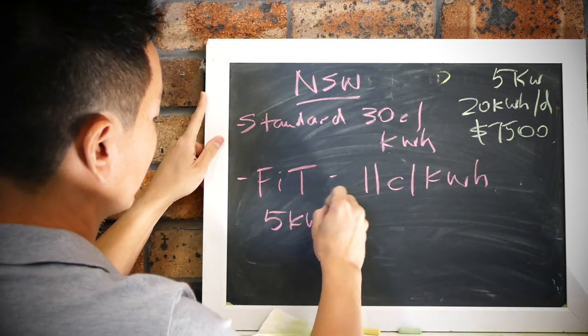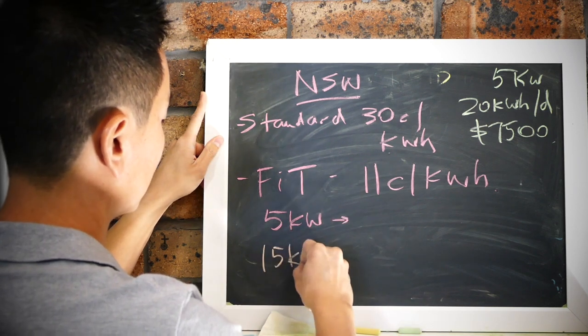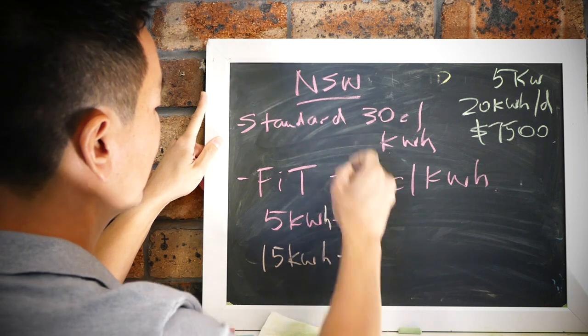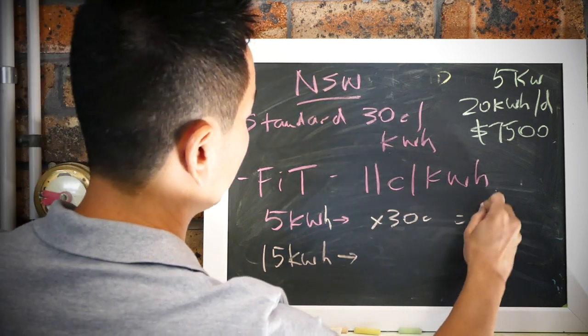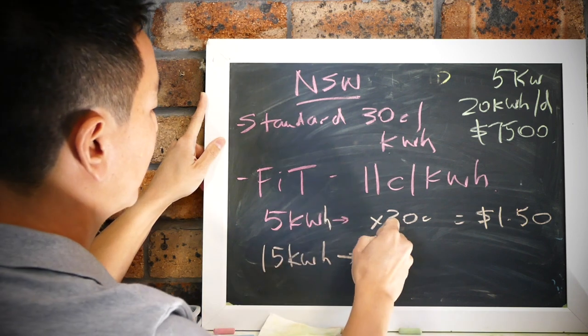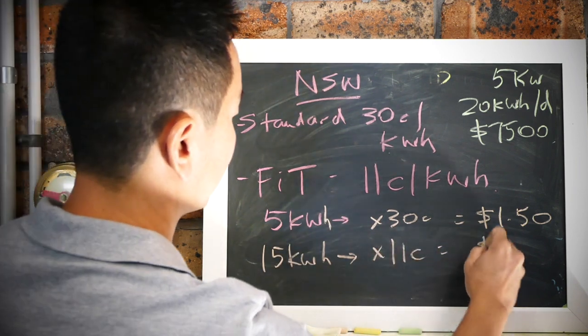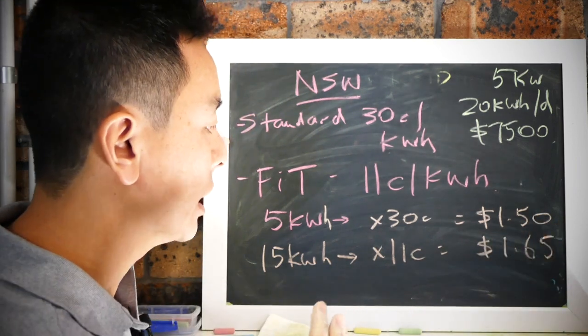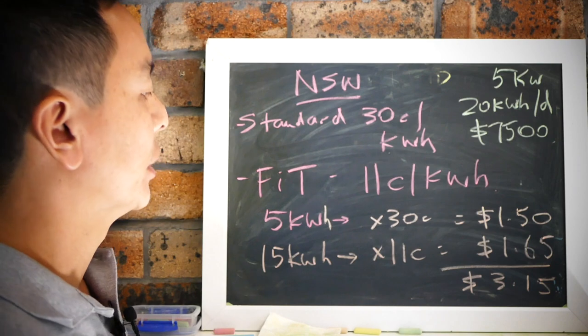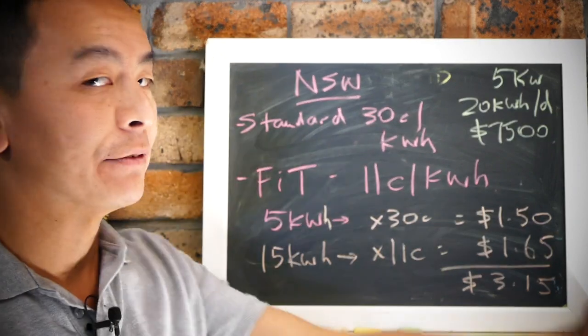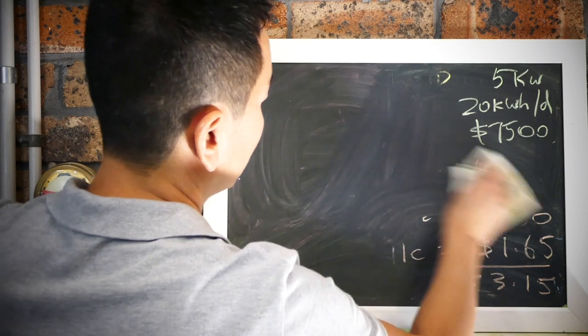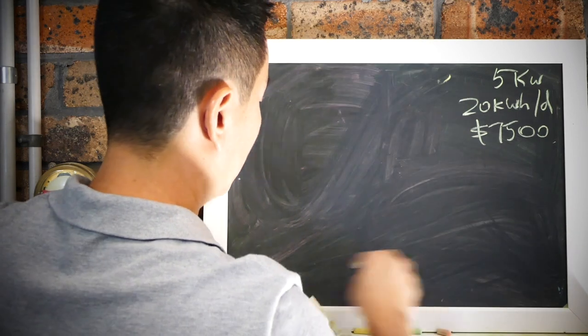So remember I had five kilowatt hours going to the house and then we have 15 kilowatt hours to the grid. So if you're saving five kilowatt hours at 30 cents per kilowatt hour, you're going to save one dollar fifty per day. If you're feeding 15 kilowatt hours to the grid at 11 cents per kilowatt hour, that's a dollar 65 that you've received from your energy company for giving the energy back to the grid. So add the two up, it's going to be three dollars and fifteen cents which can count towards your recuperation for your outlay for your solar panels.